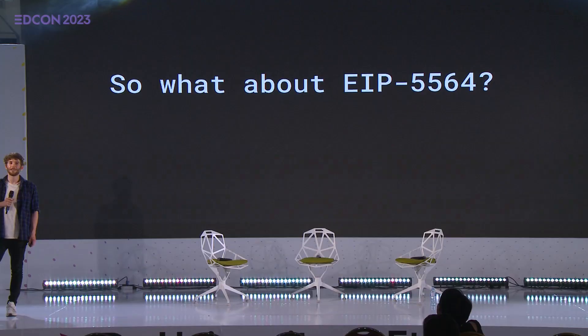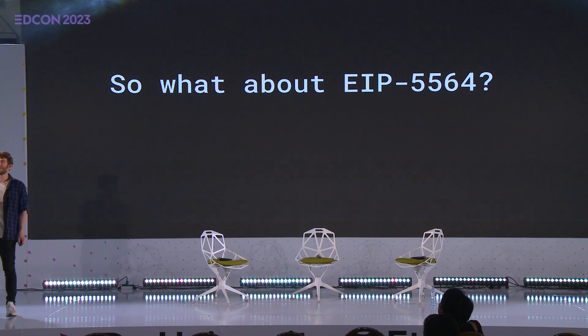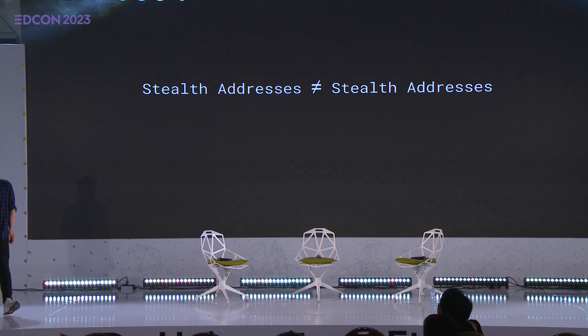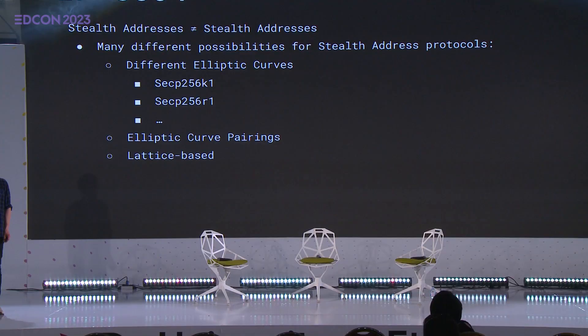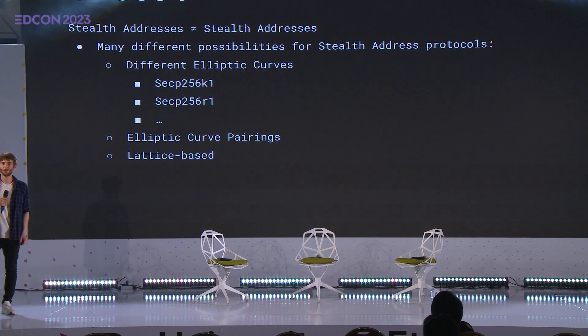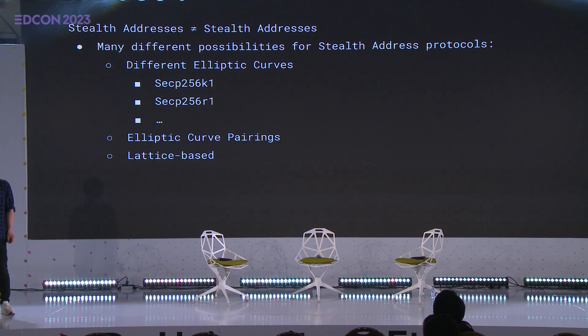Why do we even need standardization, and why does ERC 5564 exist? The problem is that stealth addresses are not directly equal to stealth addresses — there are many different protocols we can use today to generate them. I just showed a very simple protocol using the secp256k1 curve, also used on Ethereum, but we can use many different approaches. Academia has come up with many different proposals, including stealth addresses computed with post-quantum secure lattice-based cryptography, and stealth addresses using elliptic curve pairings.